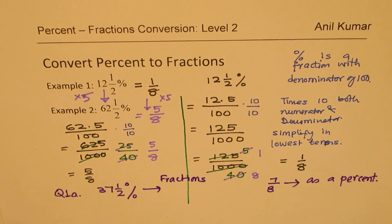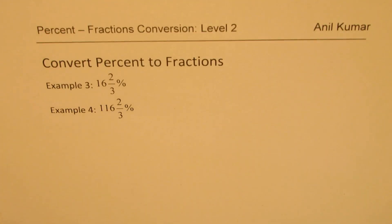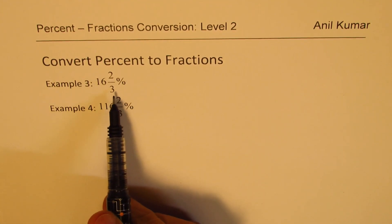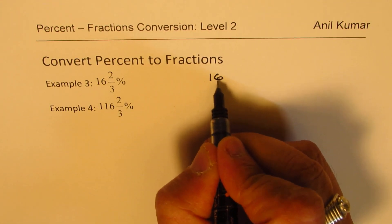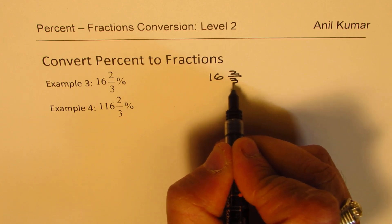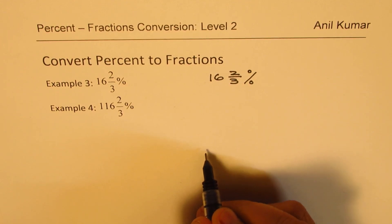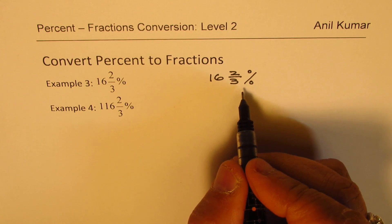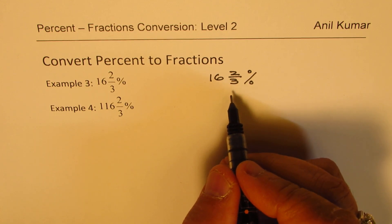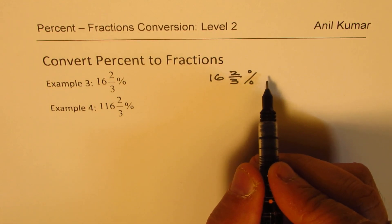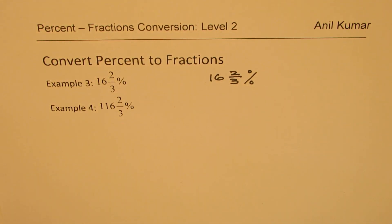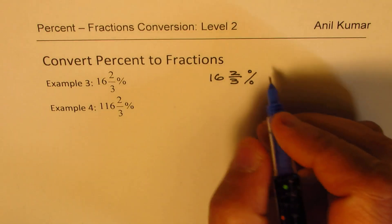Now, let's take example number 3 and example number 4. Let's convert 16 2/3 percent as a fraction. So we are working with 16 2/3 percent. Percent means out of 100. So what should we do? We have to write this as a fraction.